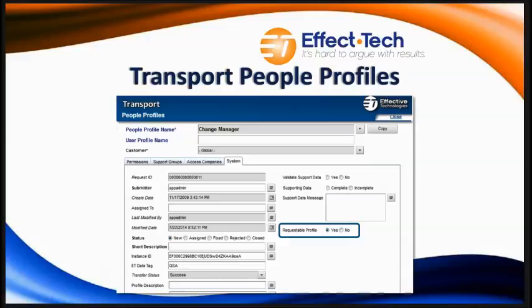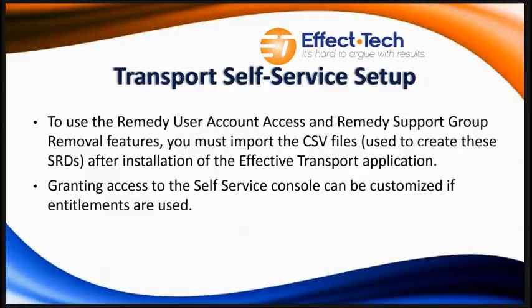On this next slide we're talking about profiles. For Transport to build the user roles, we build profile records. These profiles have permissions, support group, functional role, and company access. On the system tab, the requestable profile indicates that the change manager profile is available for selection for the Transport data management service request. Each profile can be used for the SRM data management interface and supports multi-tenancy. Even though the service request is installed when Transport is installed, there are a few steps to enable the SR so users have access. Using the onboarding console, there are pre-built import CSV files you can use to import the service request within SRM — this can be done manually or through a pre-built job that runs out of the box.